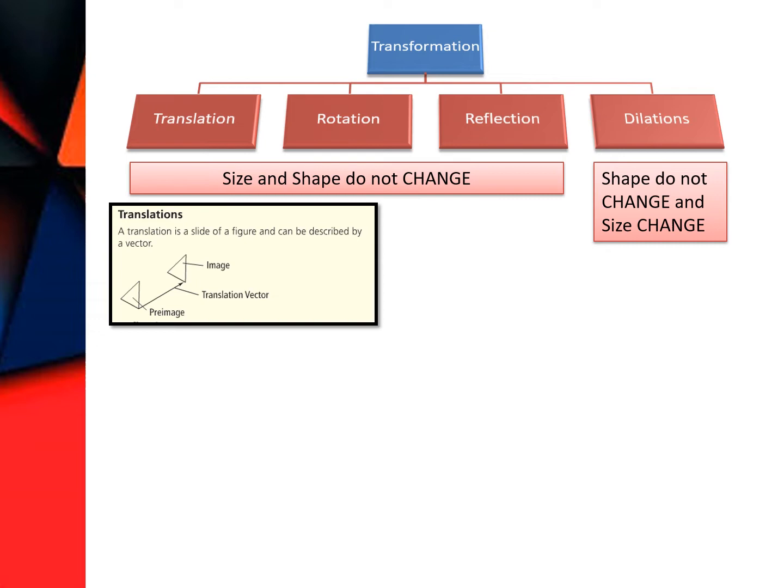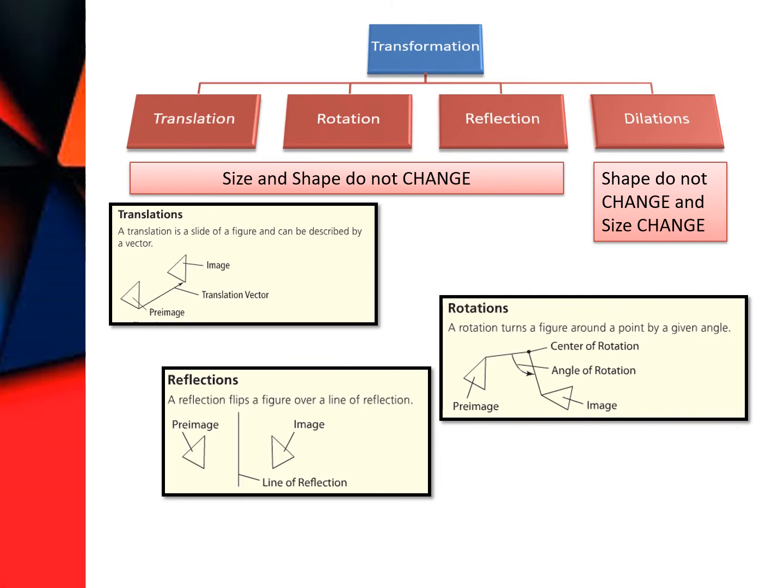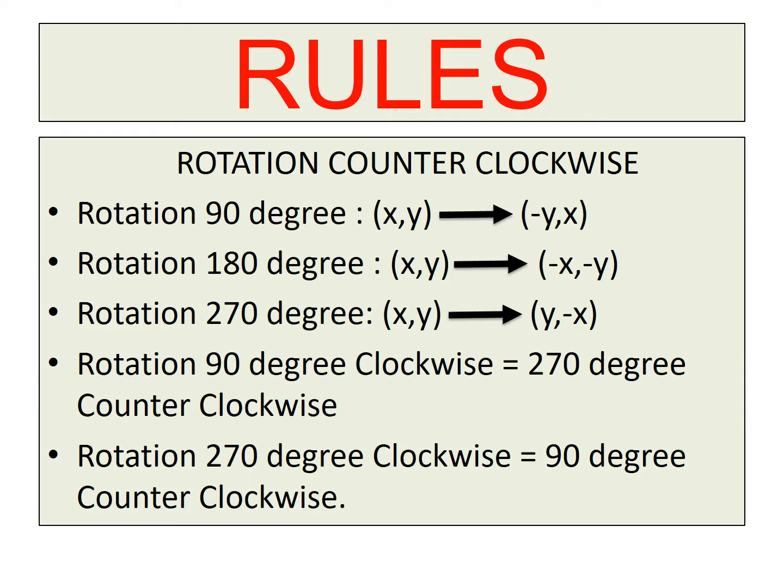It's very important to remember that in translation, the orientation of the pre-image and the image are the same — they do not change orientation. But in reflection and rotation, the orientation changes.